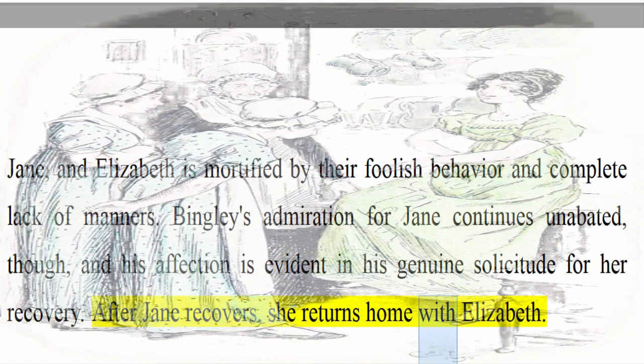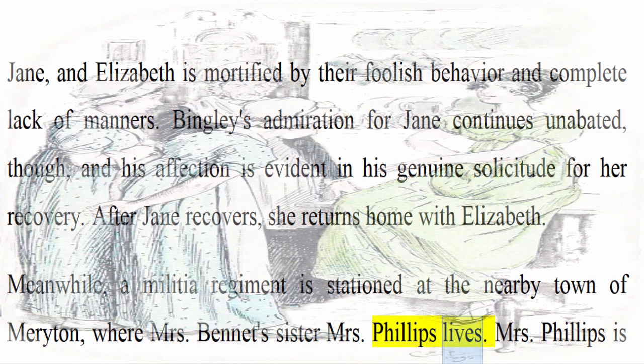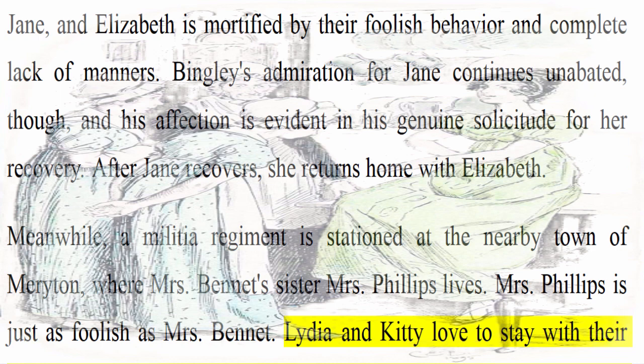Meanwhile, a militia regiment is stationed at the nearby town of Meryton, where Mrs. Bennet's sister Mrs. Phillips lives. Mrs. Phillips is just as foolish as Mrs. Bennet. Lydia and Kitty love to stay with their aunt in Meryton so they can socialize and flirt with the military officers.